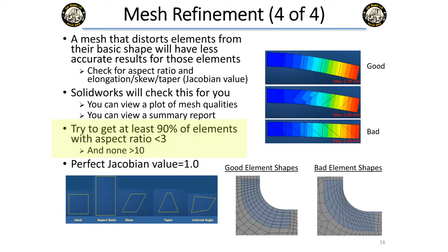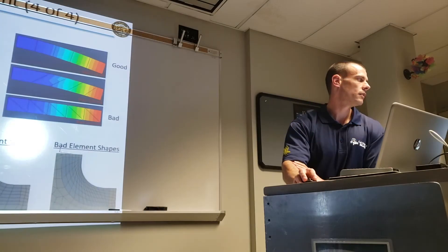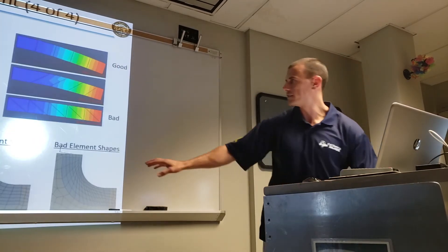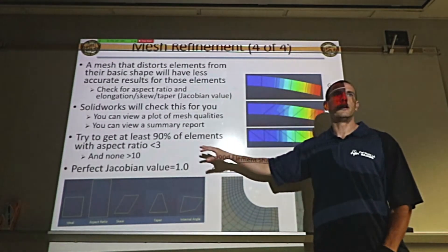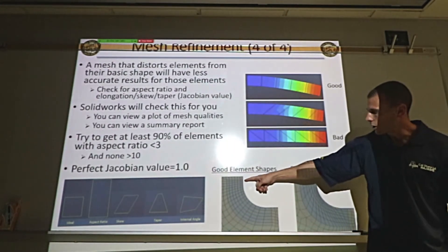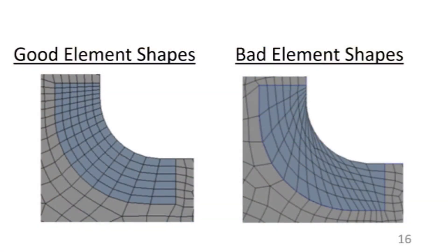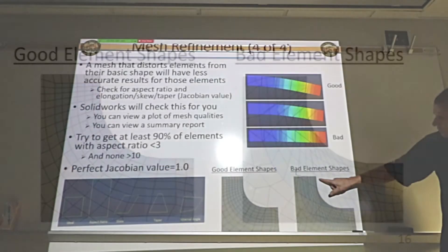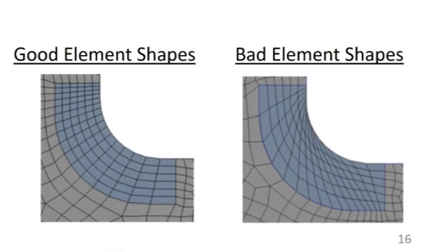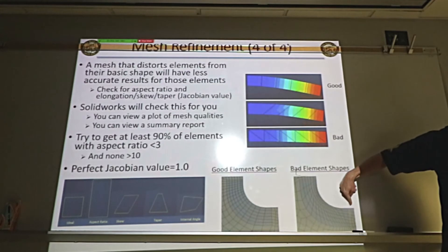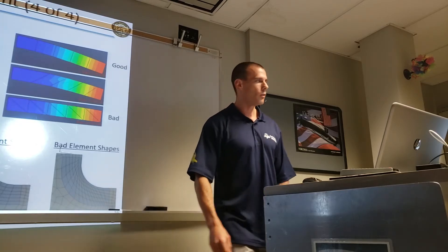Preferably nothing should have an aspect ratio greater than 10 — that's a goal based on research you should shoot for. You can check this blindly with the report, but you can also visually check your geometry. A good mesh has elements keeping their ideal shapes. A problematic mesh might occur where you applied a mesh control making a region much denser, and the transition from coarse to fine is really screwing up your mesh quality.